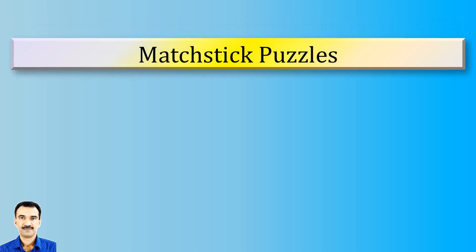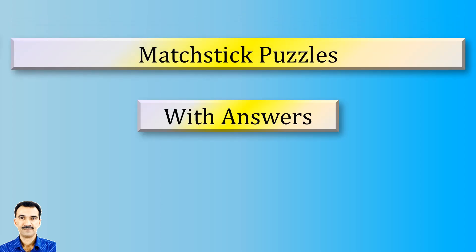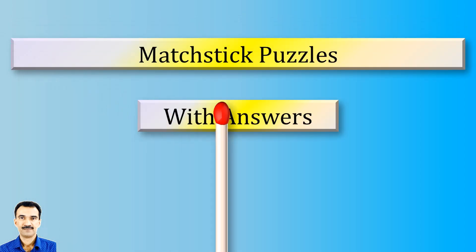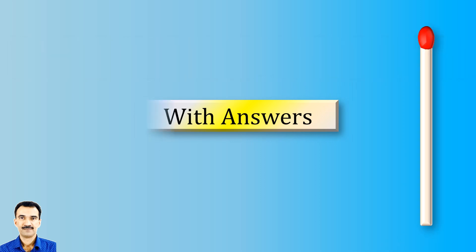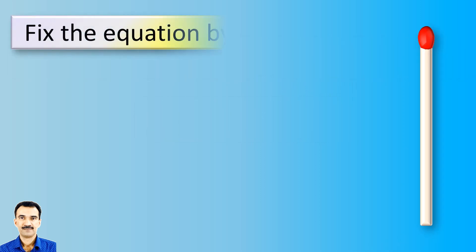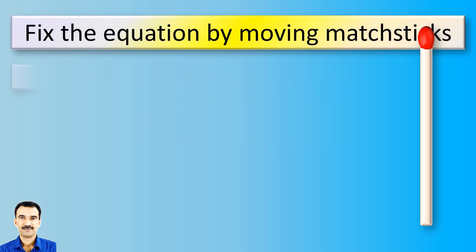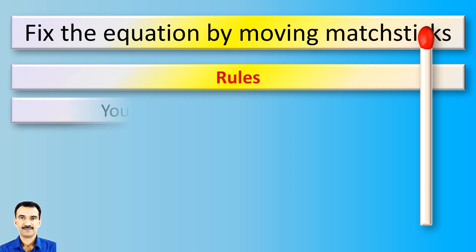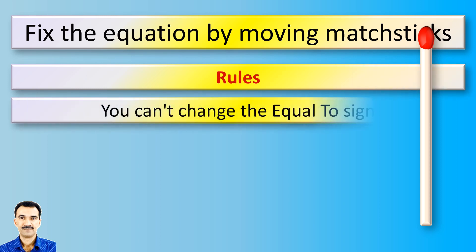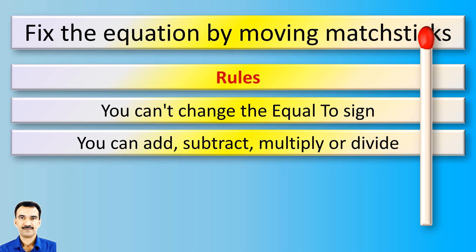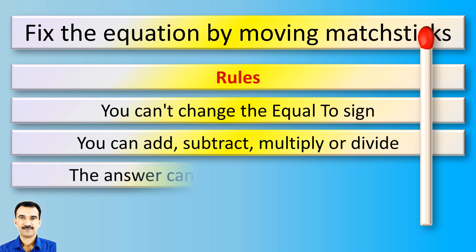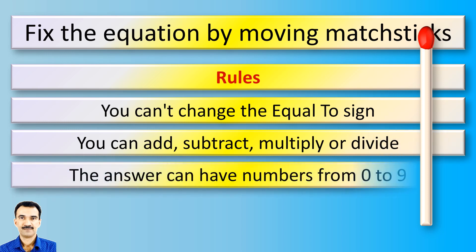Welcome to another video of Matchstick Puzzles with Answers. Please keep the rules in mind: you cannot change the equal to sign. You can add, subtract, multiply or divide. The answers can have numbers from 0 to 9.